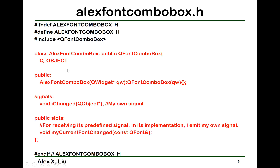This is the FontComboBox subclass. It also inherits from QFontComboBox as the base class, has the Q_OBJECT macro, a constructor that passes parameters to the base class constructor, and it also has an iChanged signal with a QObject pointer as the parameter. Its slot receives the predefined signal — in this case, myCurrentFontChanged with a QFont object reference. The checkbox class is similarly defined, with its slot called myStateChanged to receive its predefined signal.